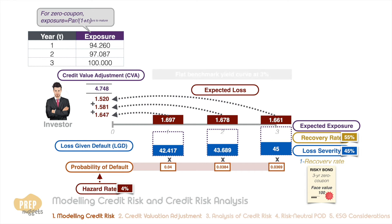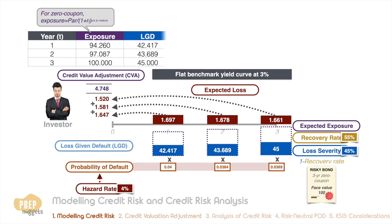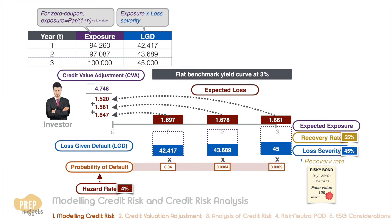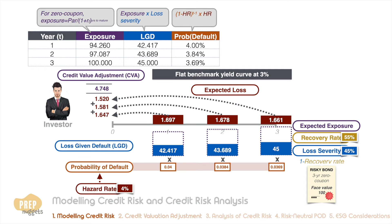If you're wondering why we use risk-free discount rates for a risky bond, we are in a way calculating the maximum value of the bond, and the amounts that may be lost will be subtracted at the end. Based on the expected exposure for each year, calculate the loss given default using the loss severity. Then use the hazard rate to work out the probability of default for each year — you may use the probability of survival to help, but it's not strictly necessary.